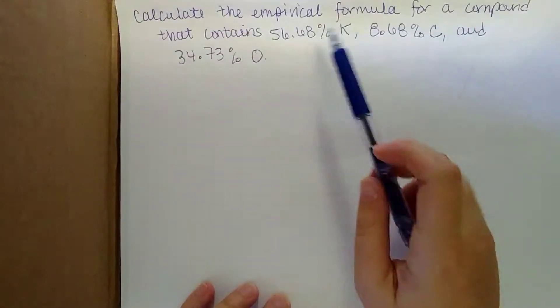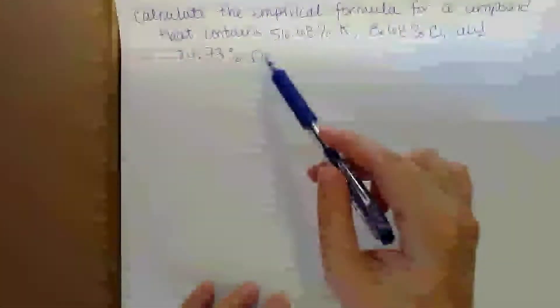We want to calculate the empirical formula for a compound that contains 56.68% potassium, 8.68% carbon, and 34.73% oxygen.